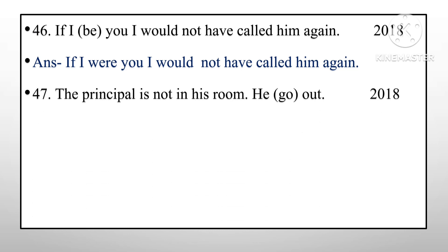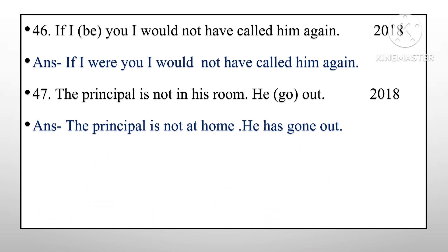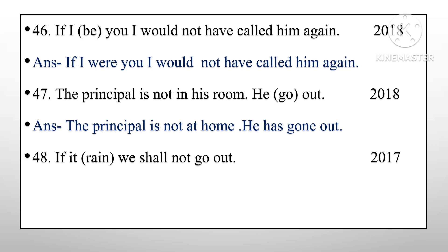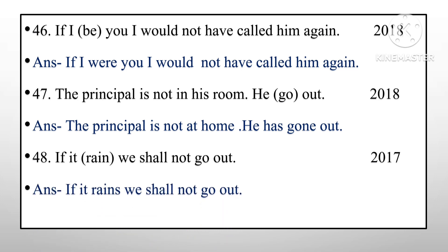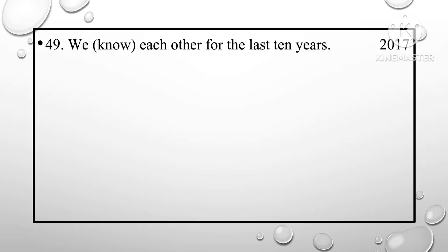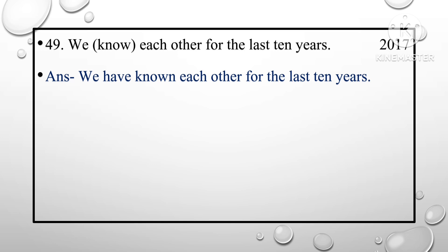'The principal is not in his room. He go out.' Answer: 'He has gone out.' 'If it rains, we shall not go out' — this is a conditional sentence: 'if it rains, we shall not go out.' 'We know each other for the last 10 years' — no continuous verb here, present perfect continuous tense: 'we have known each other for the last 10 years.'